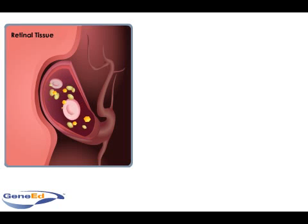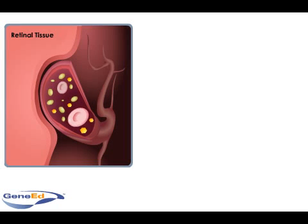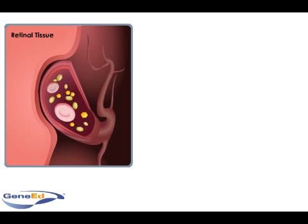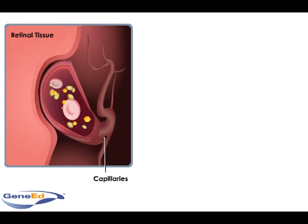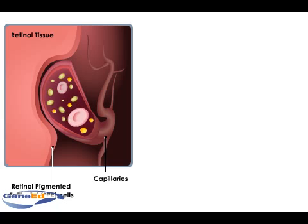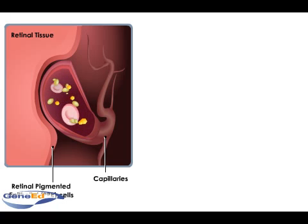Another anatomical change seen in diabetic retinopathy is the breakdown of the blood retinal barrier. This barrier functions to protect retinal tissue from exposure to potentially harmful compounds carried in the blood. It is formed by non-fenestrated capillaries of the retinal circulation and the tight junctions of the retinal pigmented epithelial, or RPE, cells. The close association of the cells in the barrier prevents large molecules in the chorocapillaries, or the vessels within